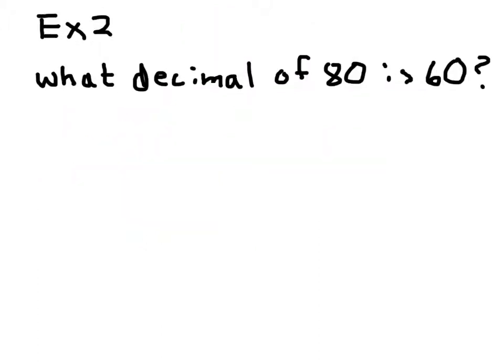Let's take a look at example two. Again, I'm going to underline my key words: what, of, and is. Following the structure of the sentence: what decimal—I'm going to use d to represent the decimal—of 80 is 60. Now I'm going to ask myself, what are they doing to d? They're multiplying by 80, so I'm going to divide by 80.